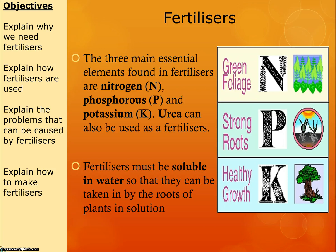For fertilisers to be useful, they need to be soluble in water. The reason for that is that plants take up the fertiliser through their roots, so we need the fertiliser to be dissolved in the water they're going to take up from the soil.